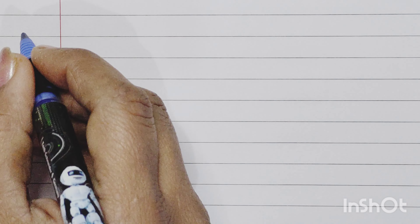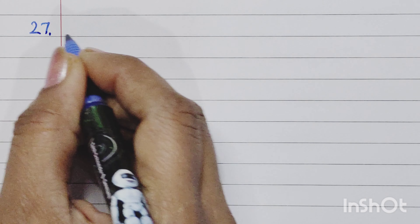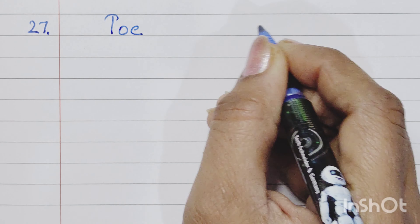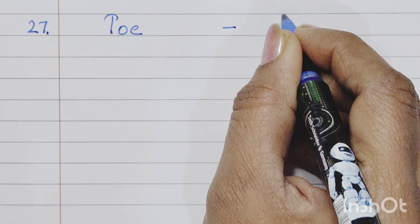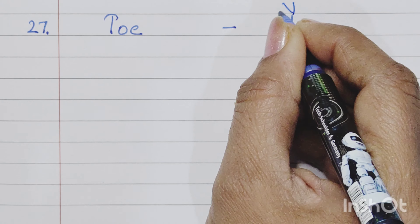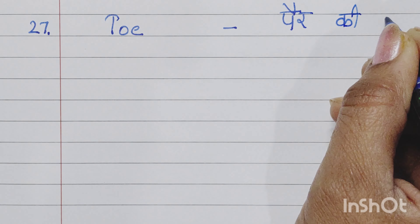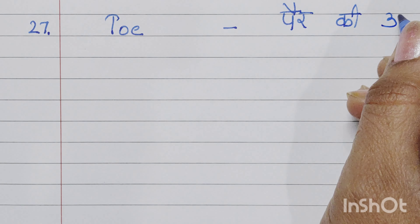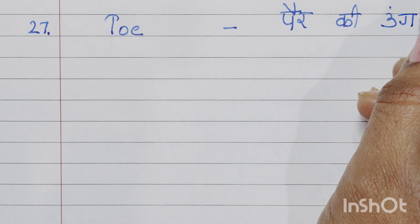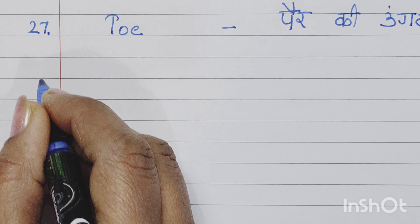Nineteenth number is finger, F-I-N-G-E-R, finger means ungli. Twentieth is wrist, W-R-I-S-T, wrist means kalai.